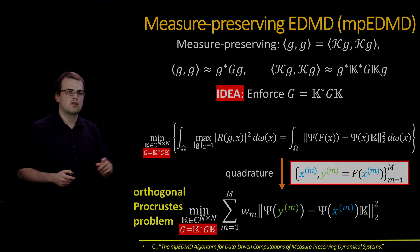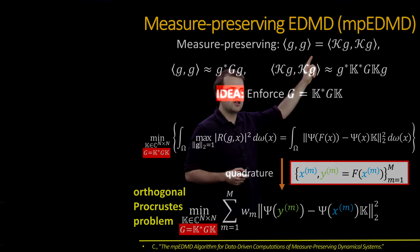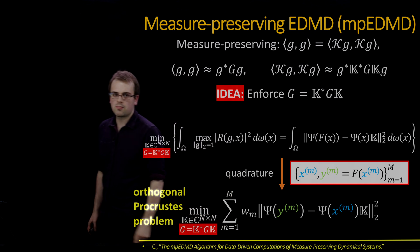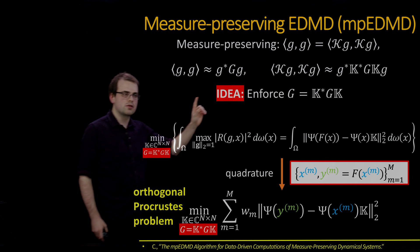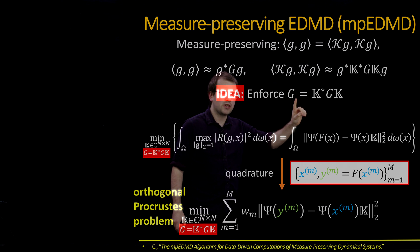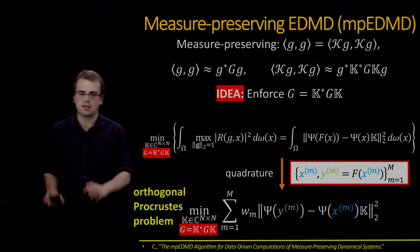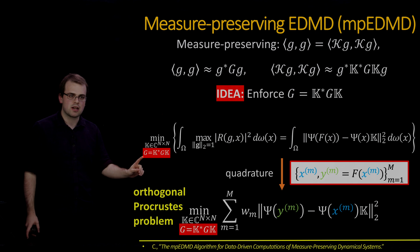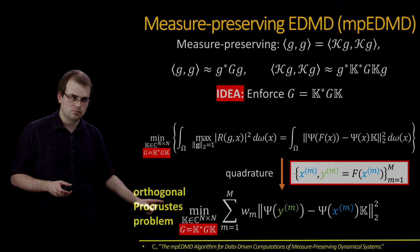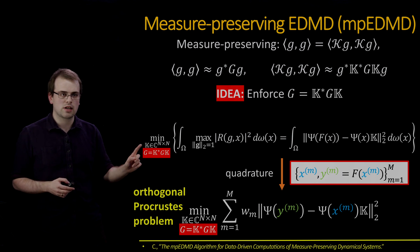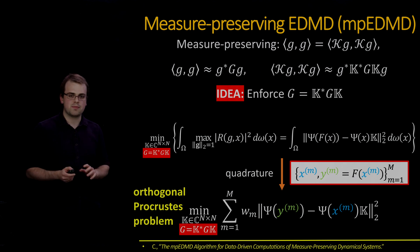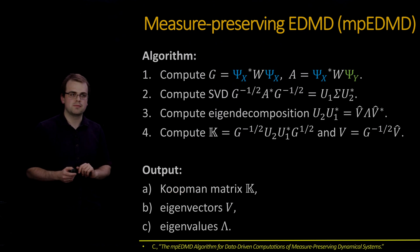Recall that measure-preserving means the Koopman operator preserves the inner product. We can approximate inner products using matrix G. The simple idea is to enforce the equality G = K^* G K. Doing this gives exactly the same minimization problem but with this additional constraint. Applying quadrature leads to an orthogonal Procrustes problem — the same problem but with this extra structural assumption.